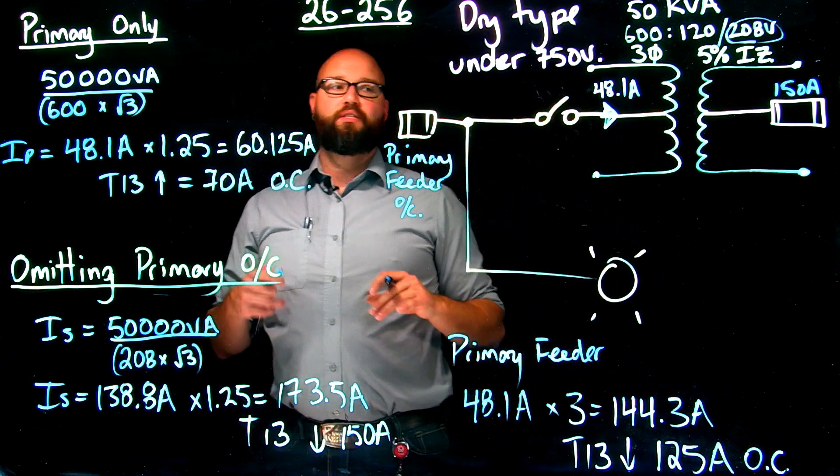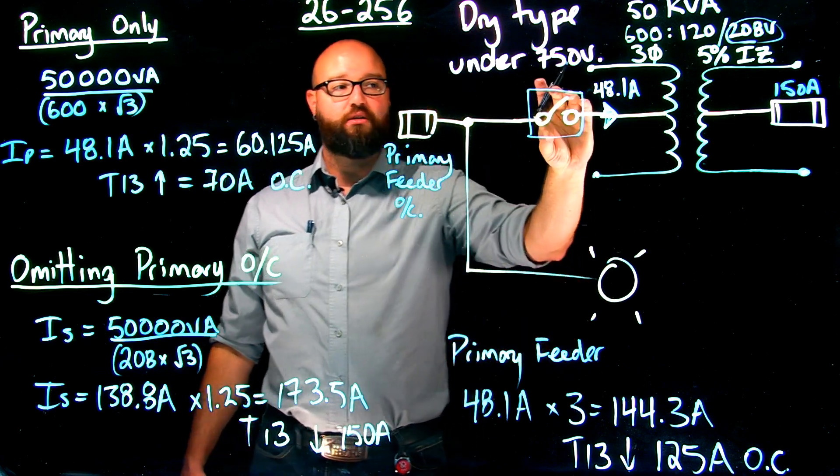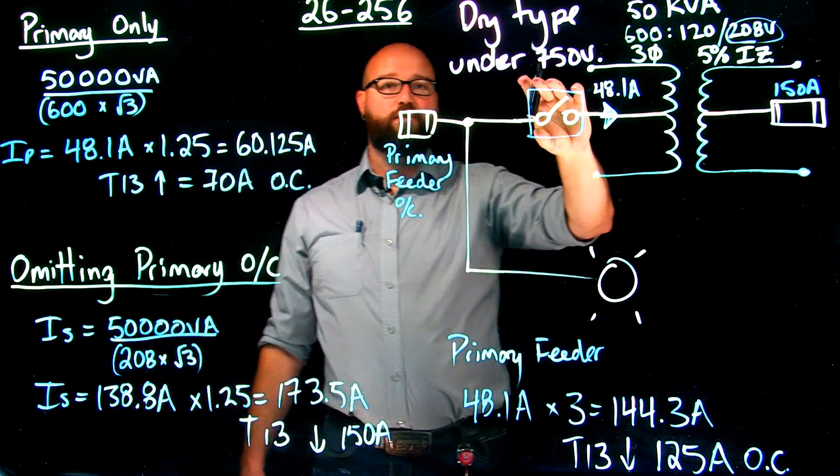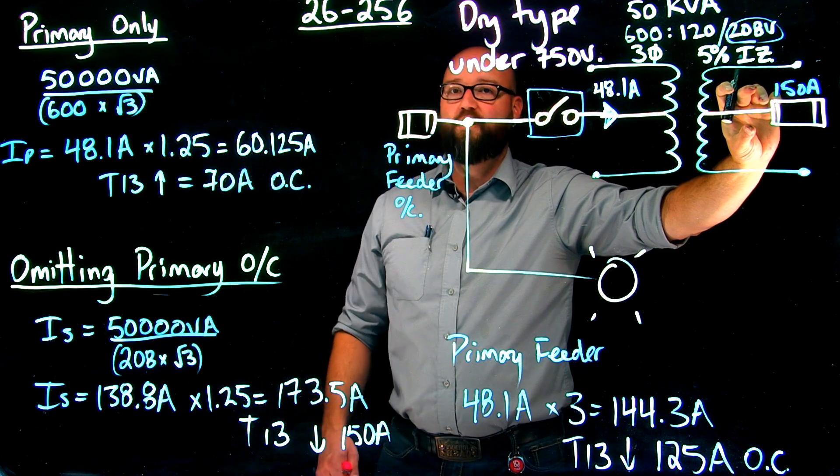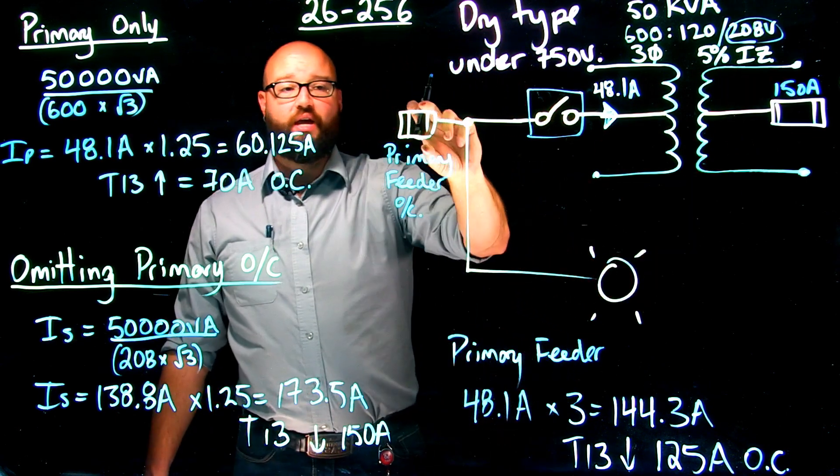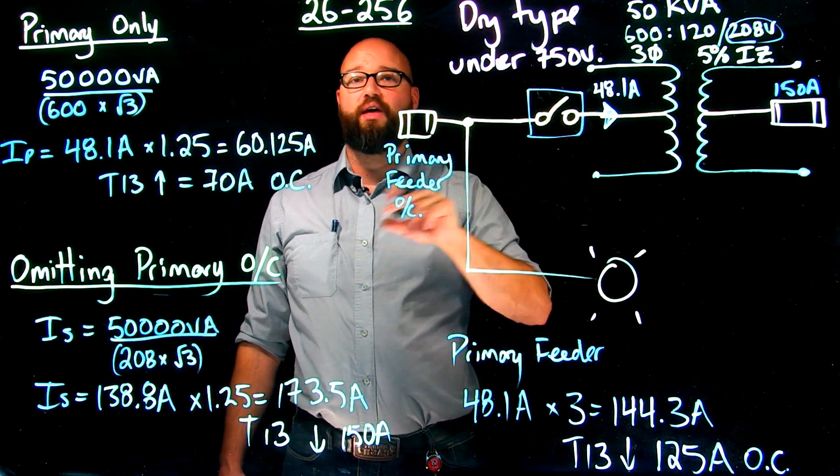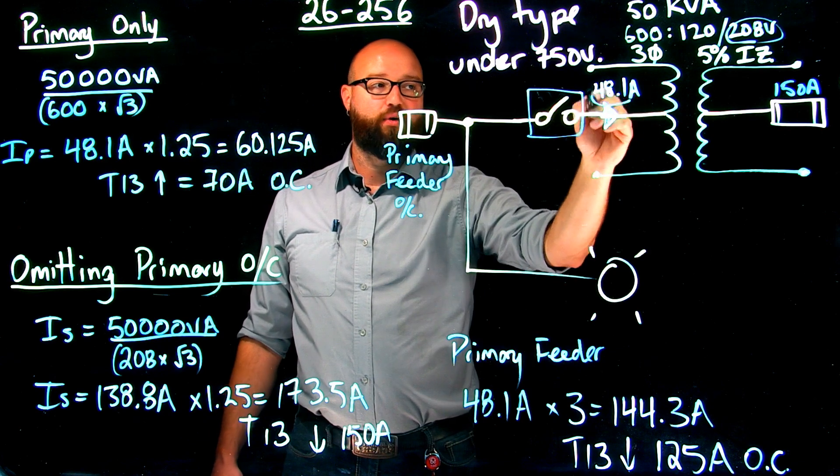So to recap on this example, if I want to omit primary protection, I am going to need to have a secondary overcurrent not more than 125% of rated secondary current, and a primary feeder overcurrent rated or set up not more than 300% of rated primary current.